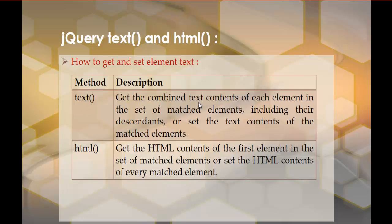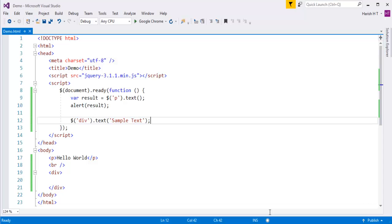The text method gets the combined text contents of each element in the set of matched elements, including the descendants, or sets the text contents of the matched elements. So that's what we learned: how to fetch text from a particular element and also how to set text to a particular element.